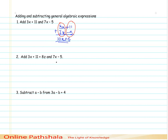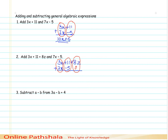Let me take one more example on how to add. This is a good time for you to pause and try it on your own. If I group the like terms together, I have 3x plus 7x as the first group, 11 minus 5 as the second group, and 8z with nothing in the second term — so I treat it as 8z plus 0. Adding: 3x plus 7x gives 10x, 11 minus 5 gives 6, and 8z remains as it is. So the result when adding 3x plus 11 plus 8z with 7x minus 5 is 10x plus 6 plus 8z.